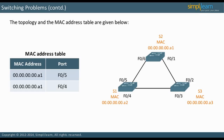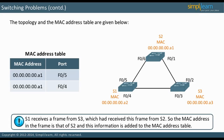The MAC address table is filled. S1 receives a frame from S3. S3 has received this frame from S2, so the MAC address in the frame is that of S2. This information is added to the MAC address table. The entry says that a frame with a destination address of MAC A1 should be sent to interface F04. However, the first entry tells the switch to send any frames with destination address MAC A1 out interface F05. We cannot have the frame sent out to different interfaces. Let us continue our discussion on switching problems in the next slide.